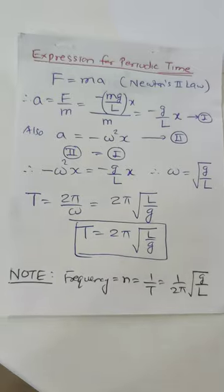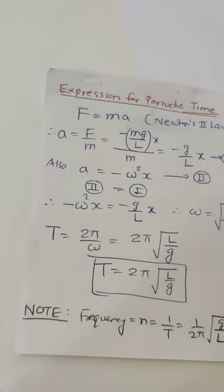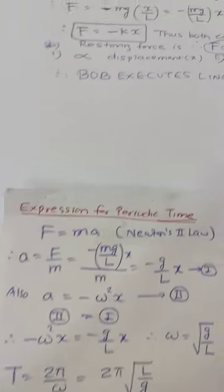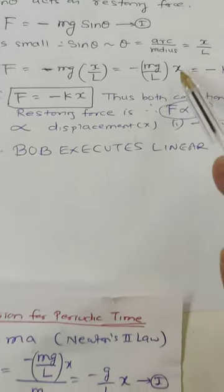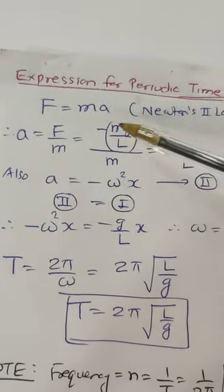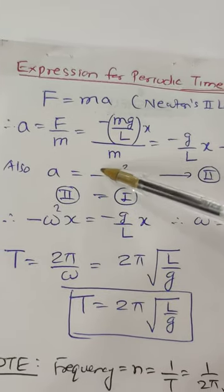We have seen F equal to what? Minus mg upon l into x. So F equal to minus mg upon lx upon m. This m m gets cancelled. That is minus g upon lx, equation number 1.